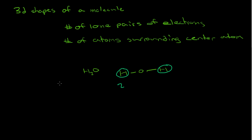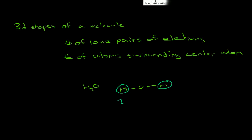The easiest and most effective way to determine the shapes of molecules is simply to do a table. I'll include one here and show you my method. In this diagram, the X's are atoms and these are lone pairs of electrons.